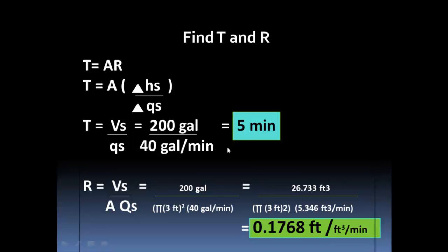R is solved by the formula V_s/(A × Q_s). The volume is 200 gallons, and we solve for the area as π(3 ft)² multiplied by 40 gallons per minute, converting 200 gallons to cubic feet. Solving the calculation gives R = 0.1768 ft per (ft³/min). This means for every unit of volumetric flow per minute, there is a relative change in height of 0.1768 ft.